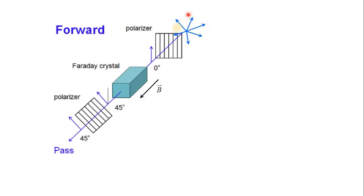Let's assume we have an unpolarized light. It's coming through a polarizer — in this case a vertical polarizer — and it's vertically polarized. It passes through the Faraday crystal, which rotates the light by 45 degrees. Then we have a polarizer at 45 degrees, so this light passes through.